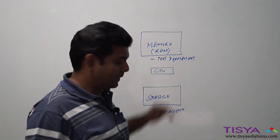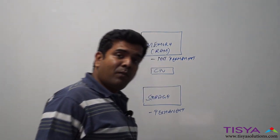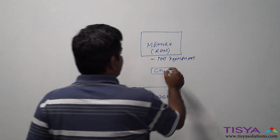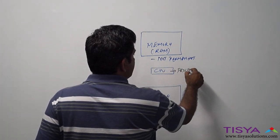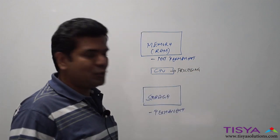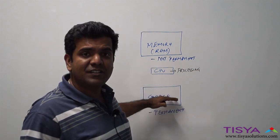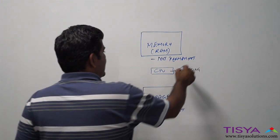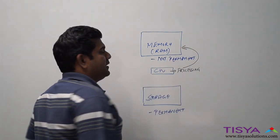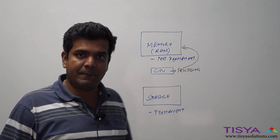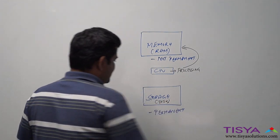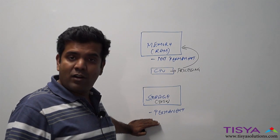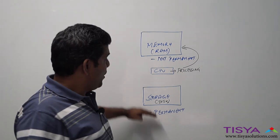What is important is if the CPU has to do any kind of processing, it cannot do it on the disk or on the storage directly. It can be done only on the data that is present in the memory. Storage, or otherwise disk, which is permanent, cannot be worked on directly.